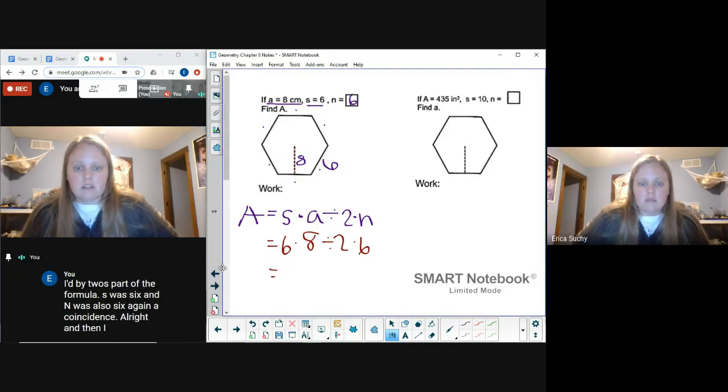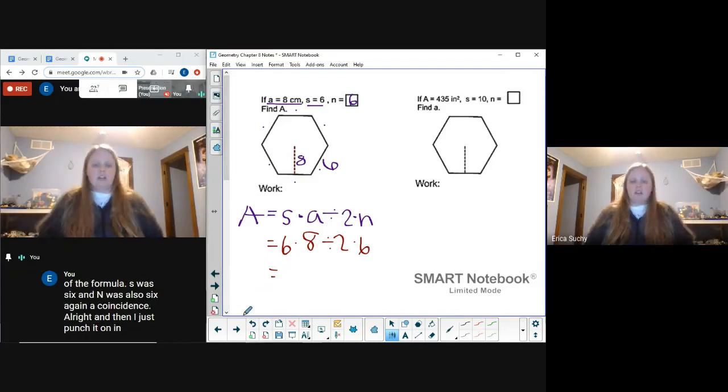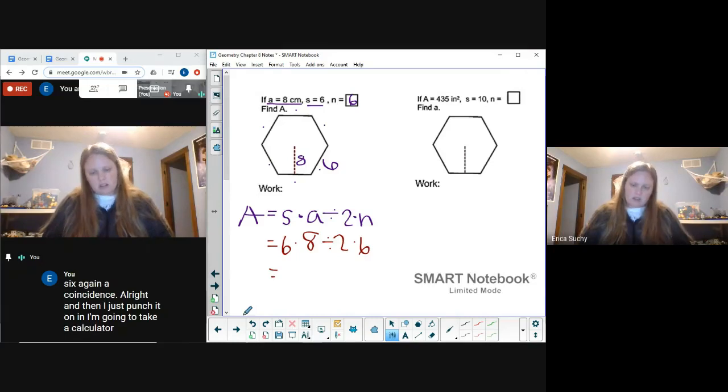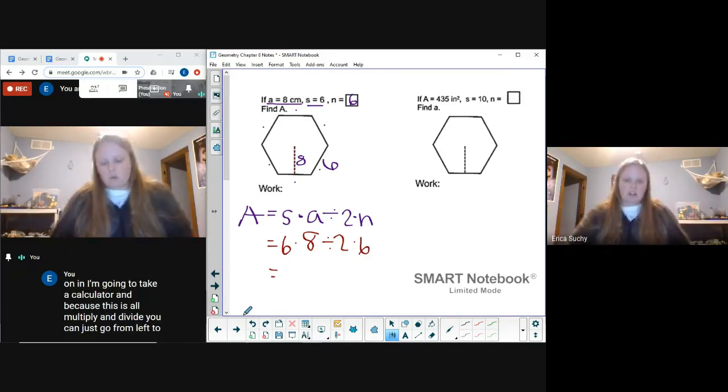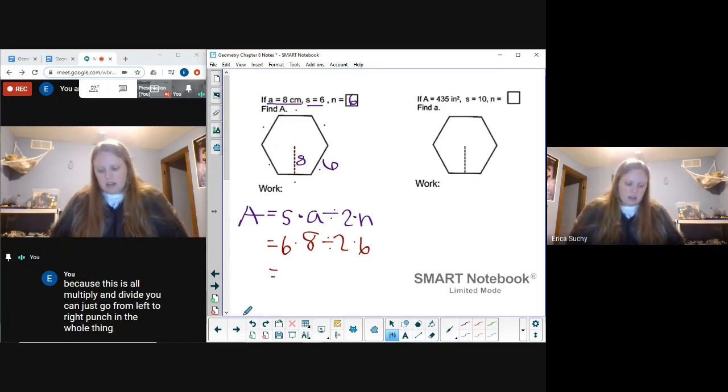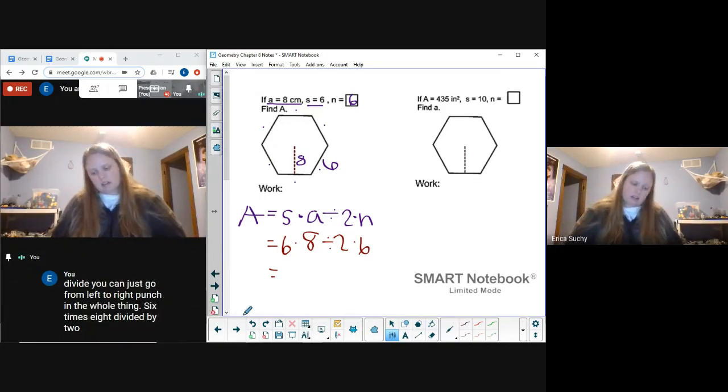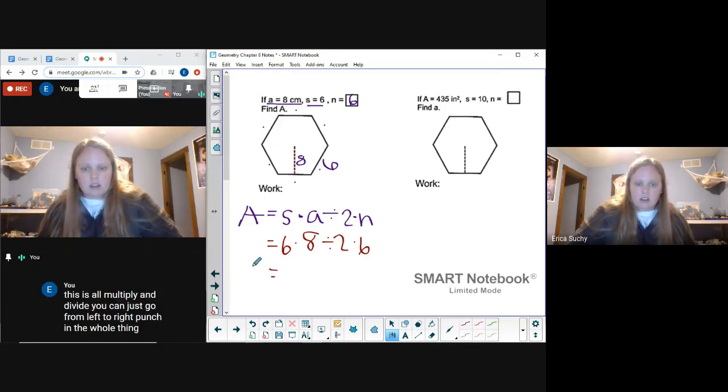All right, and then I just punch it in. So I'm going to take my calculator, and because this is all multiply and divide, you can just go from left to right: 6 times 8 divided by 2 times 6. So I get an area here of 144.